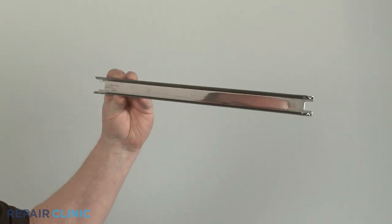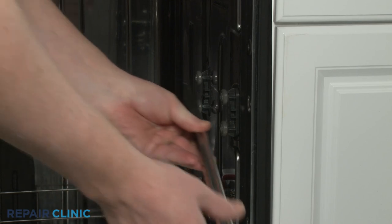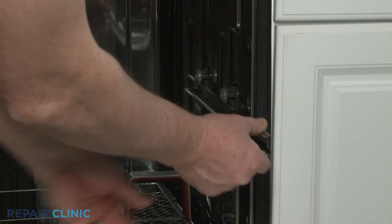To install the new dish rack rail, align it on the rollers, then snap the rear rack stop onto the rail.